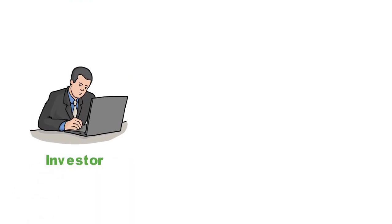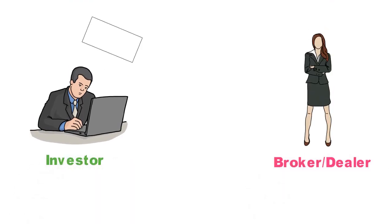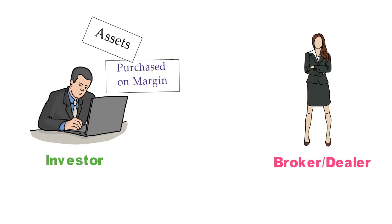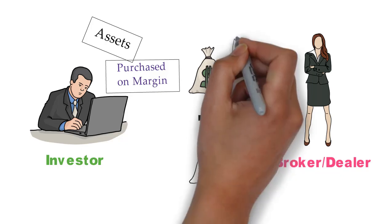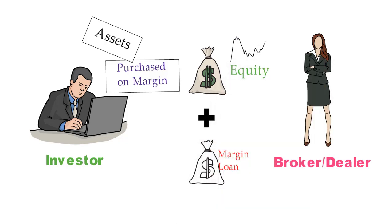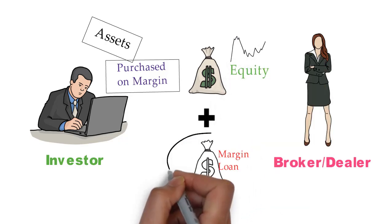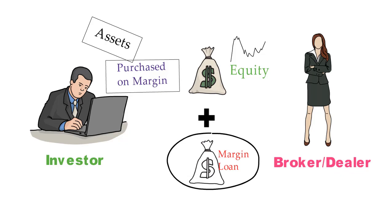Purchasing stock on margin means that the investor borrows part of the purchase price of the stock from a broker. Therefore, the margin in the account is the portion of the purchase price contributed by the investor; the remainder is borrowed from the broker. In other words, margin refers to owner's equity in a margin account. With the fluctuation of stock price, the equity value in the account changes, but the borrowed amount stays the same.